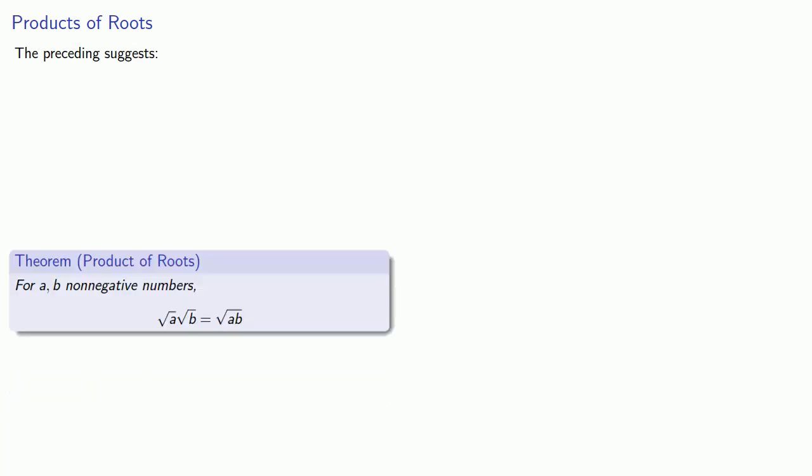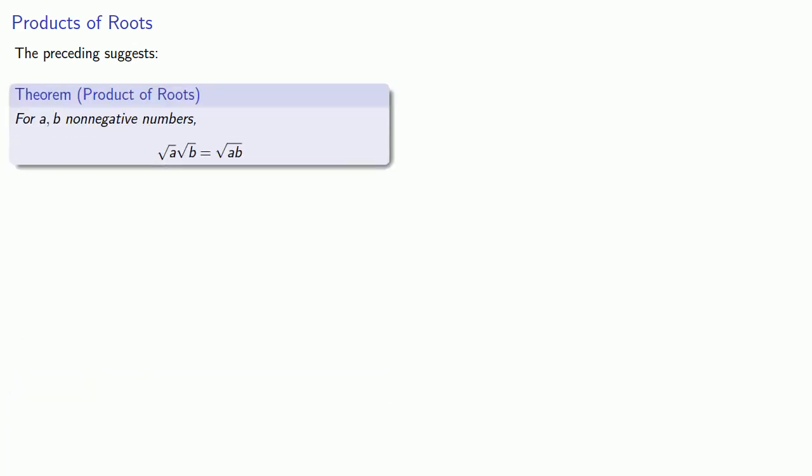The preceding suggests the following theorem: for a and b non-negative numbers, the square root of a times the square root of b is equal to the square root of a times b.